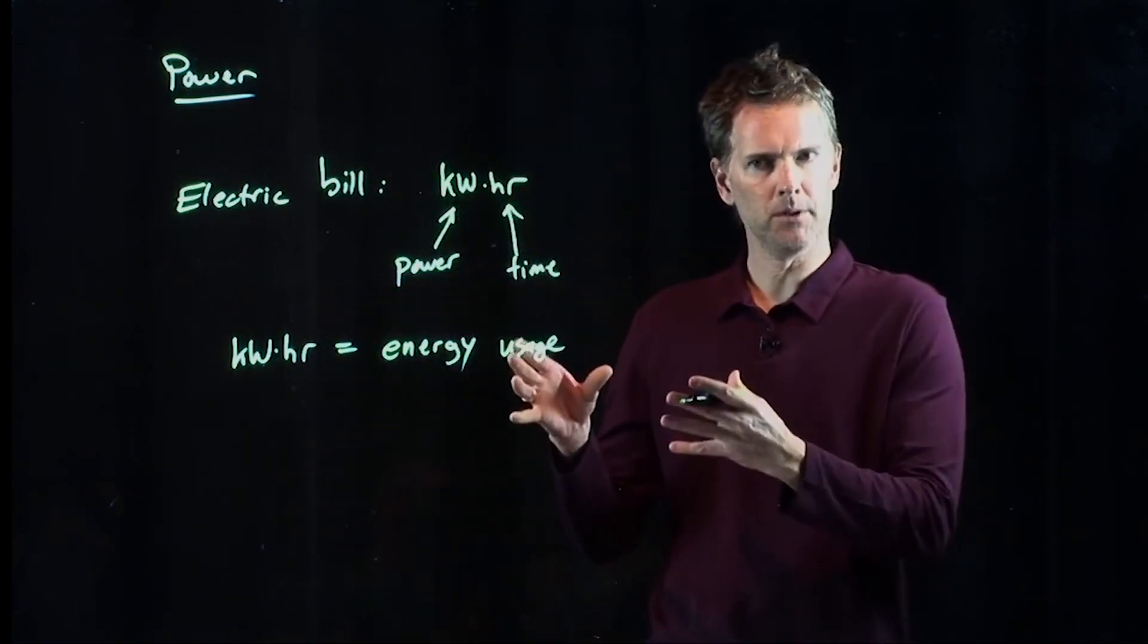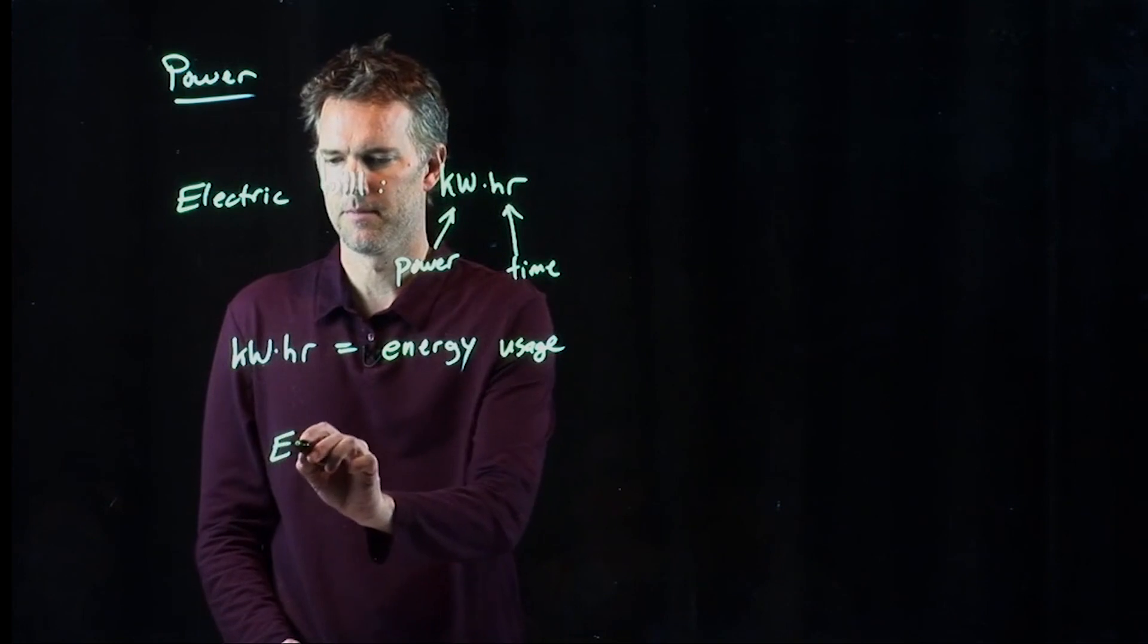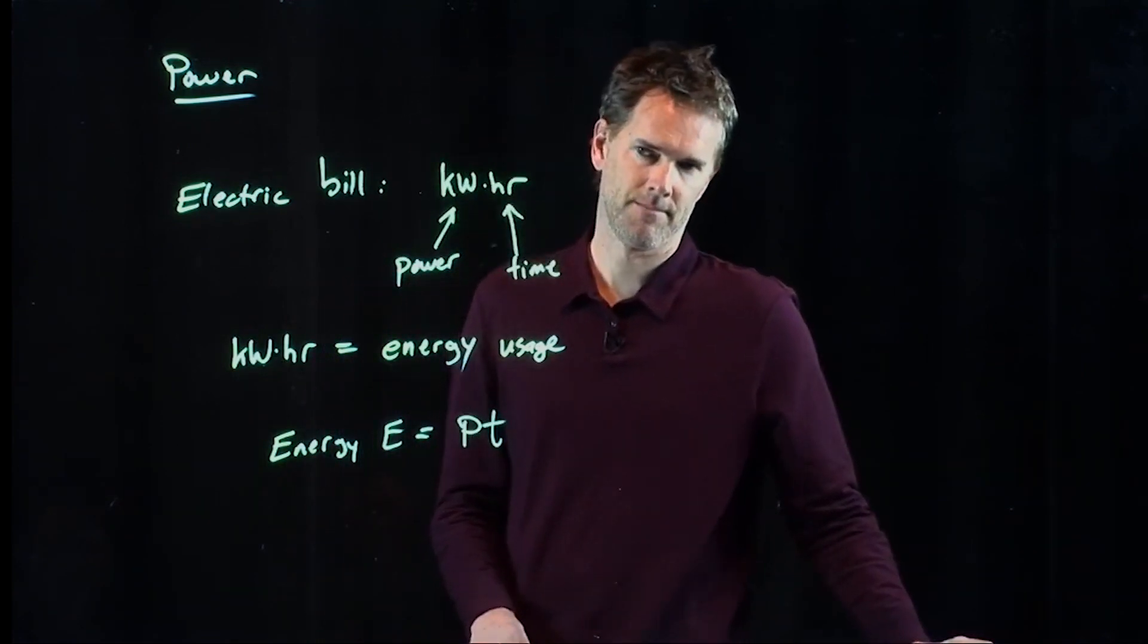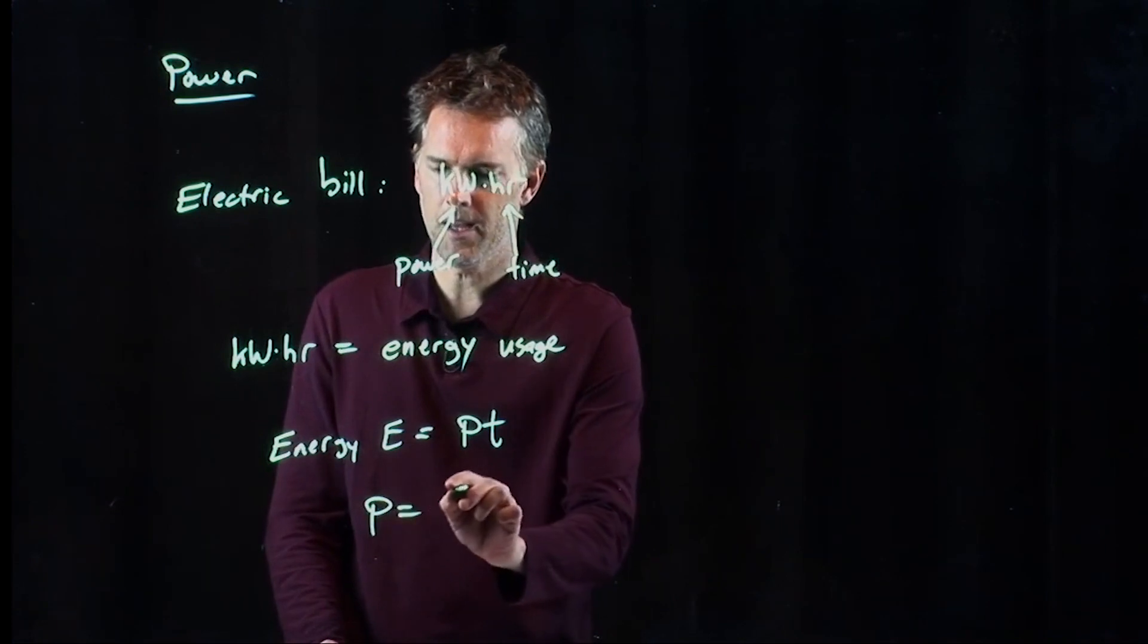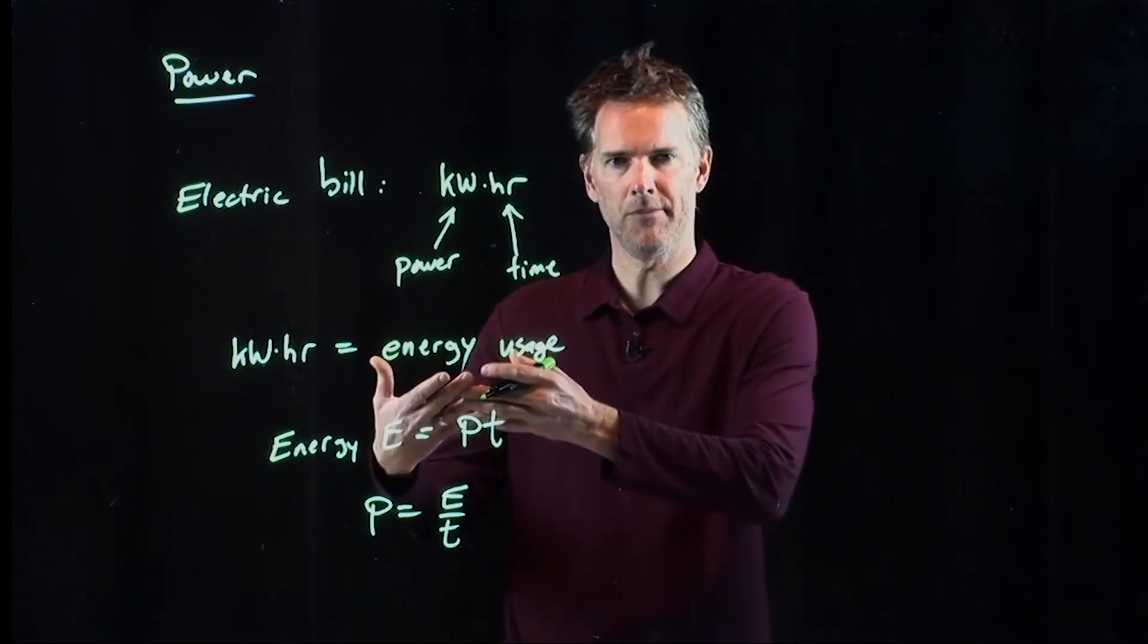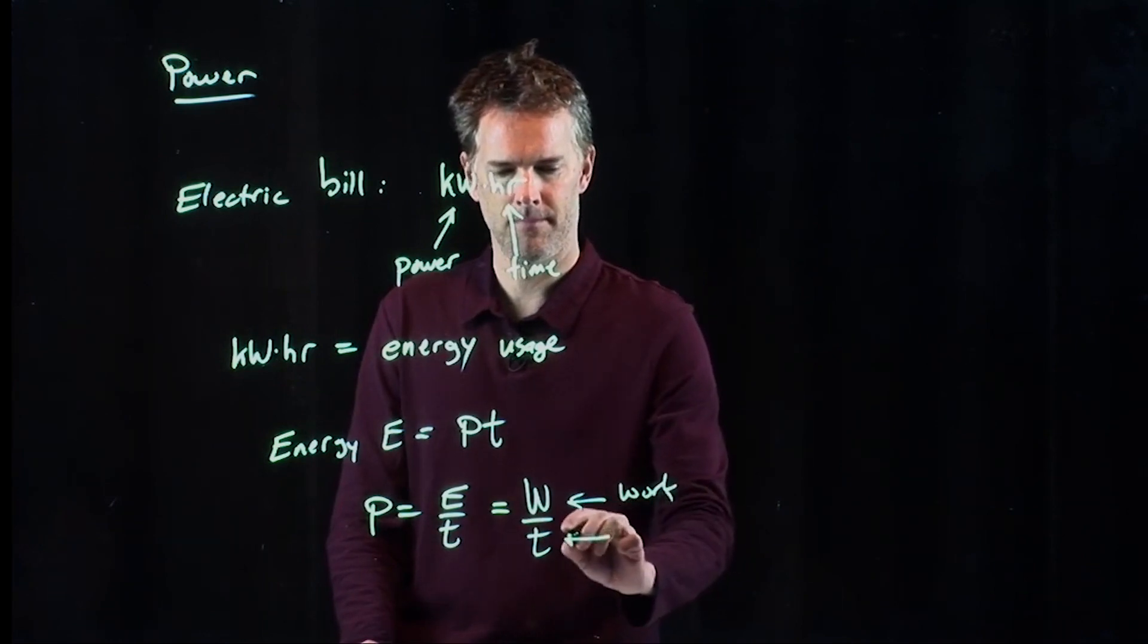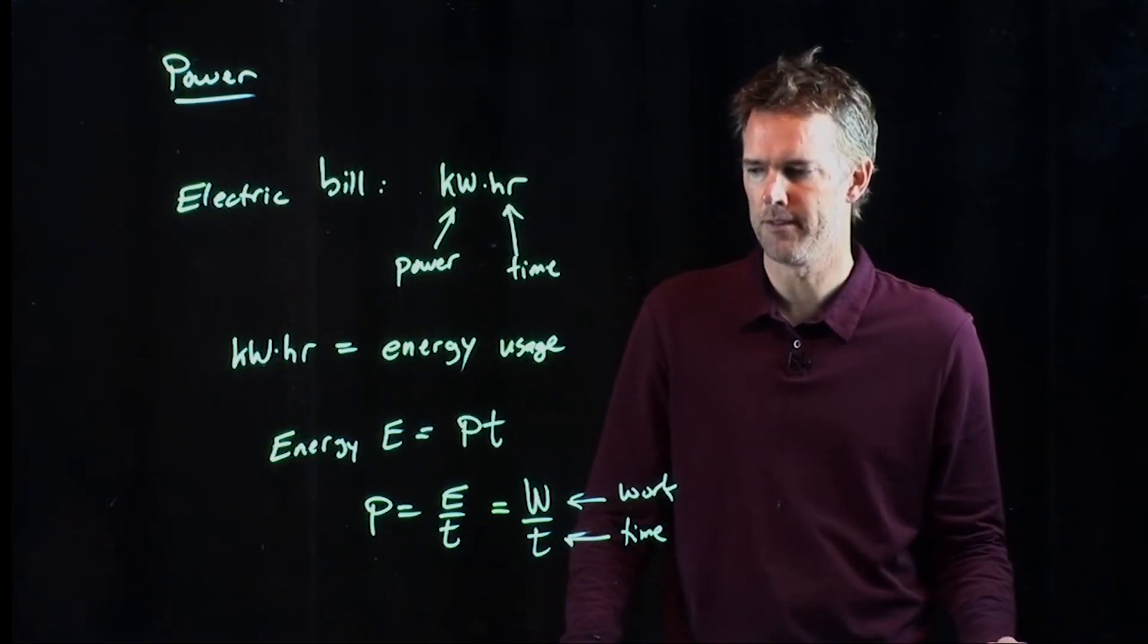And so now look, we can start to put some stuff together here, right? This is learning physics from your mail. Energy, E, is apparently power times time. So power is energy over time. Or if all that energy came from some work that you did, then it is work divided by time. Power is work divided by time.